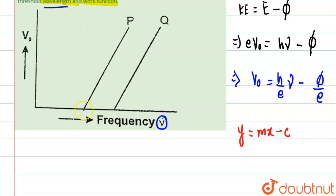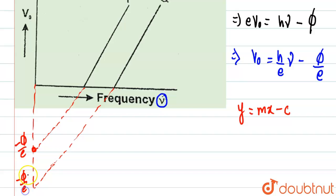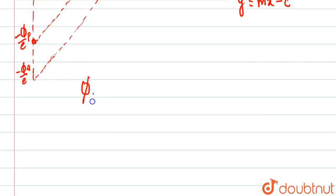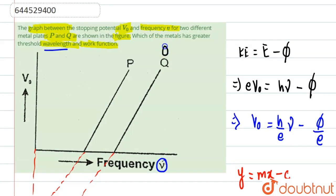The negative intercept formed when we extend the graph back gives us −φ/e. So the intercept for P is −φ_P/e and for Q is −φ_Q/e. Looking at the graph, Q's intercept is further down, meaning its work function is greater. Therefore, work function of Q is greater than work function of P.